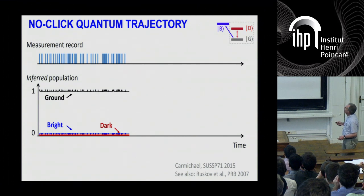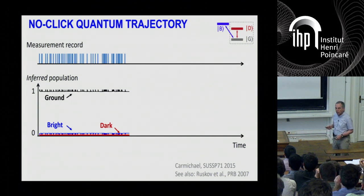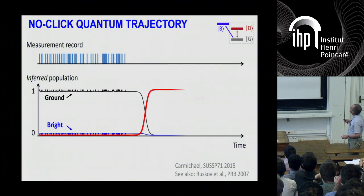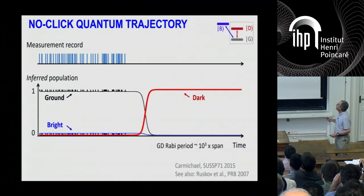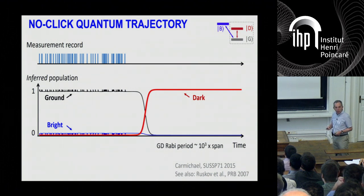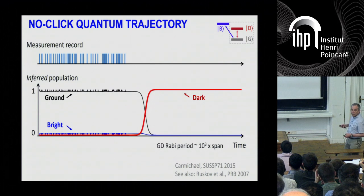So the population of the various states can be computed from quantum trajectories formalism and this is fairly simple here. So you're most of the time in the ground state because the fluorescence from B to G is very fast. So you have a little bit of population in the bright state and you have absolutely no population in the dark state. But if you continue the integration of the equation, the inferred population of the dark and the ground state basically cross each other. And there is this middle point here which you can define as the moment where the jump occurs.